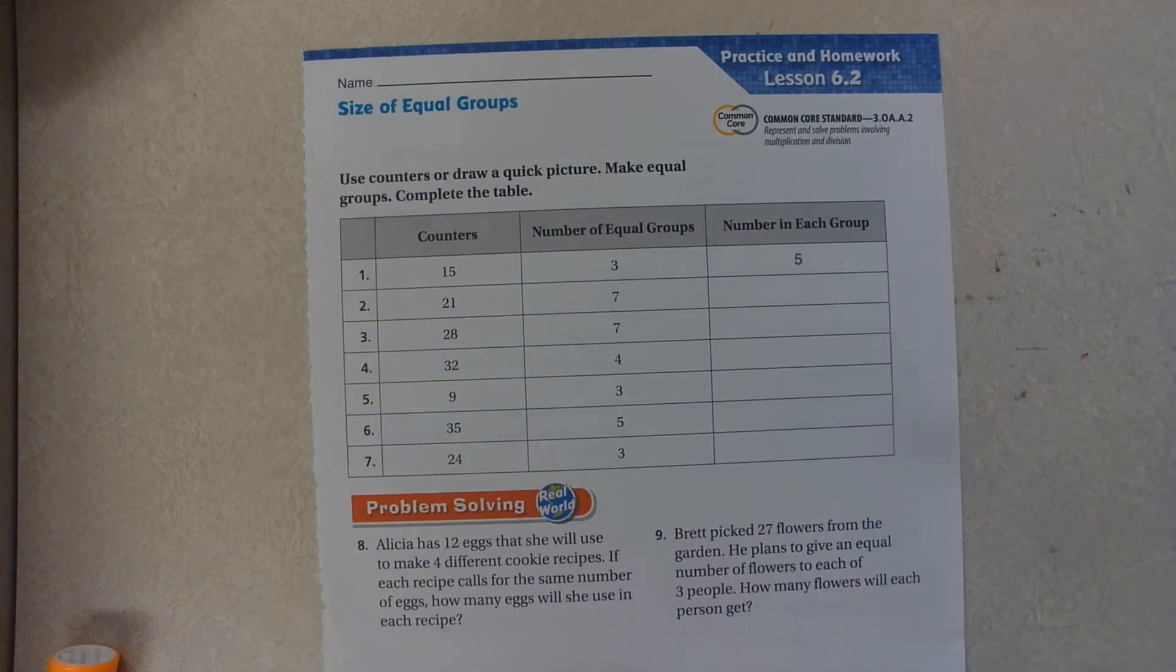Hello boys and girls. Today we are working on lesson 6.2 in our Go Math book and it says to use counters or draw a quick picture. Make equal groups and complete the table.